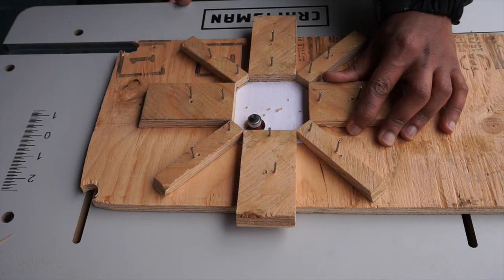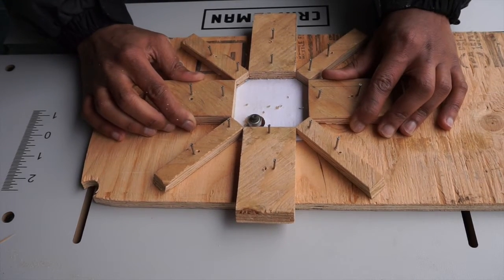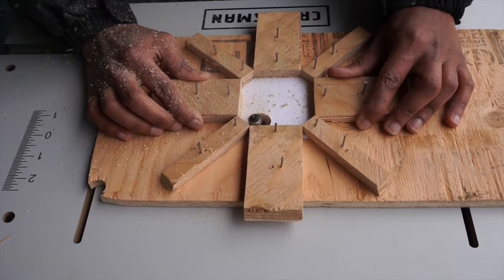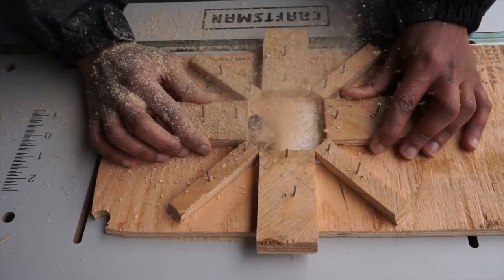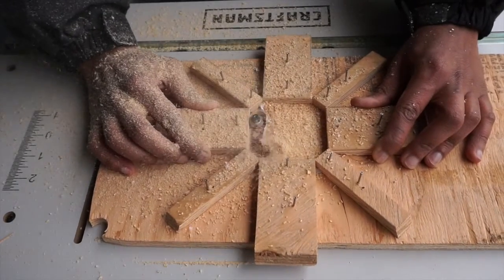So now it's finally time to start cutting the template. I'm using a flush trim bit here on the router. So what this bit does is that it's using the wood that we had nailed onto the board as a guide to cut out the holes.